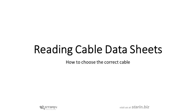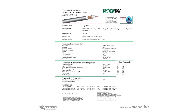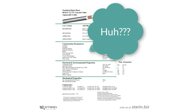In my last video we discussed cable selection using Ohm's Law. This is important to understand because it affects every kind of signal that we use in ProAV. It came to my attention that finding cable data sheets and understanding them can make the use of Ohm's Law very difficult. So today we'll look at a few cable data sheets so we can understand what's important to know.